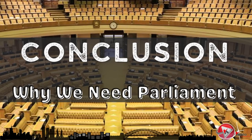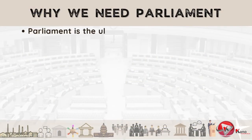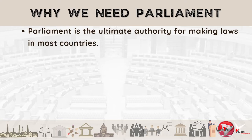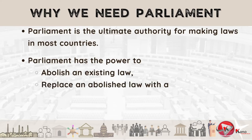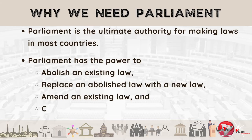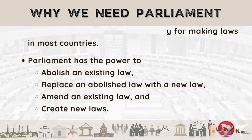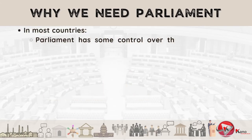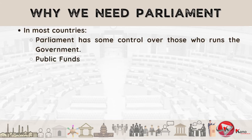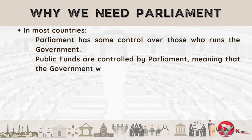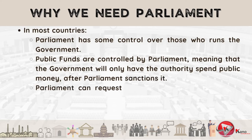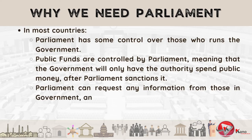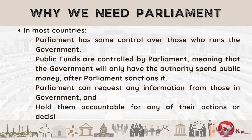Parliament is such an important institution in the proper running of a country. Parliament is considered the ultimate authority for making laws in most countries, with the power to abolish an existing law, replace an abolished law with a new law, amend the existing law, and create new laws. In most countries, Parliament has some control over those who run the government. Public funds are also controlled by Parliament, meaning that government will only have the authority to spend public money after Parliament sanctions it. Parliament can also request any information from those in government and hold them accountable for any of their actions or decisions.